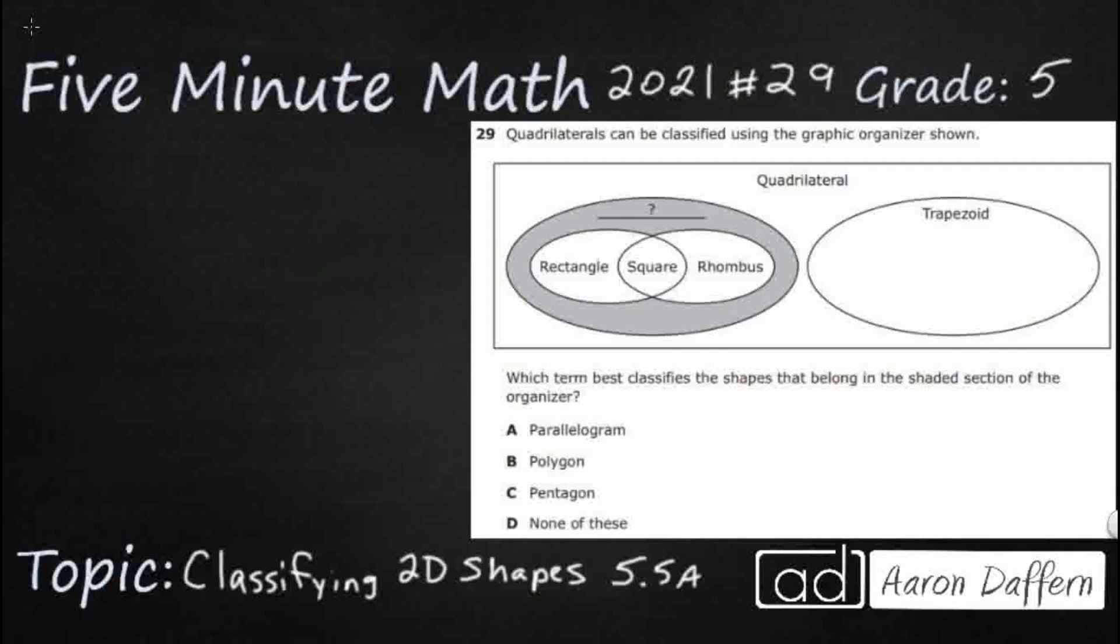So, we have this diagram here showing quadrilaterals, and all quadrilaterals are four-sided polygons. We are going to call them polygons because all polygons have two things in common. They are closed, and then they have straight sides. So that is what we are dealing with today—closed, straight-sided shapes that have four sides.